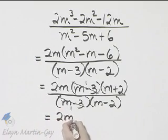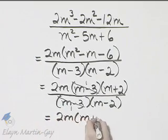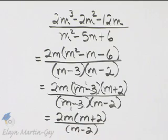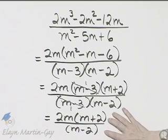In the numerator, I have 2m times m plus 2. In the denominator, I have m minus 2, and I am completely simplified.